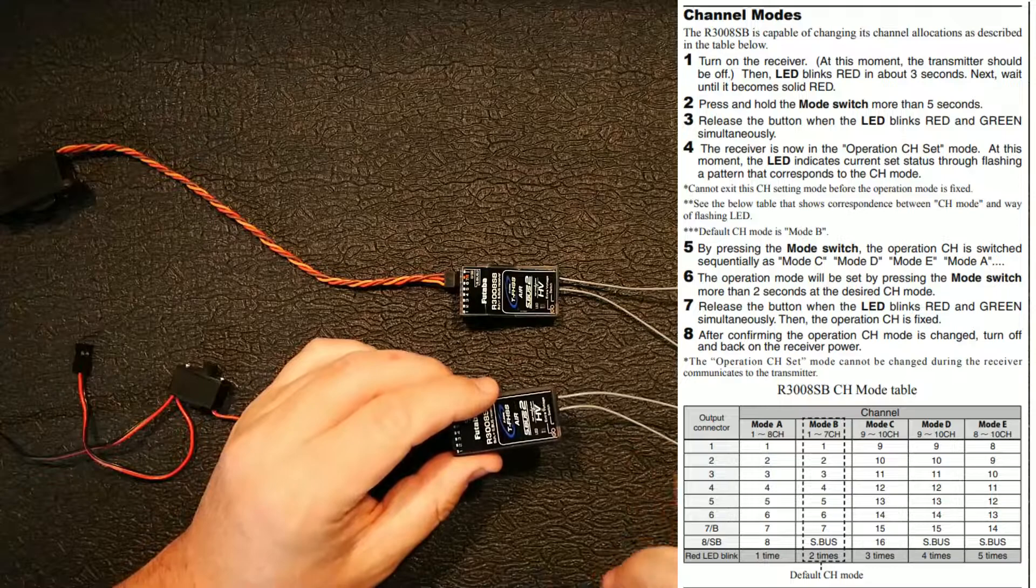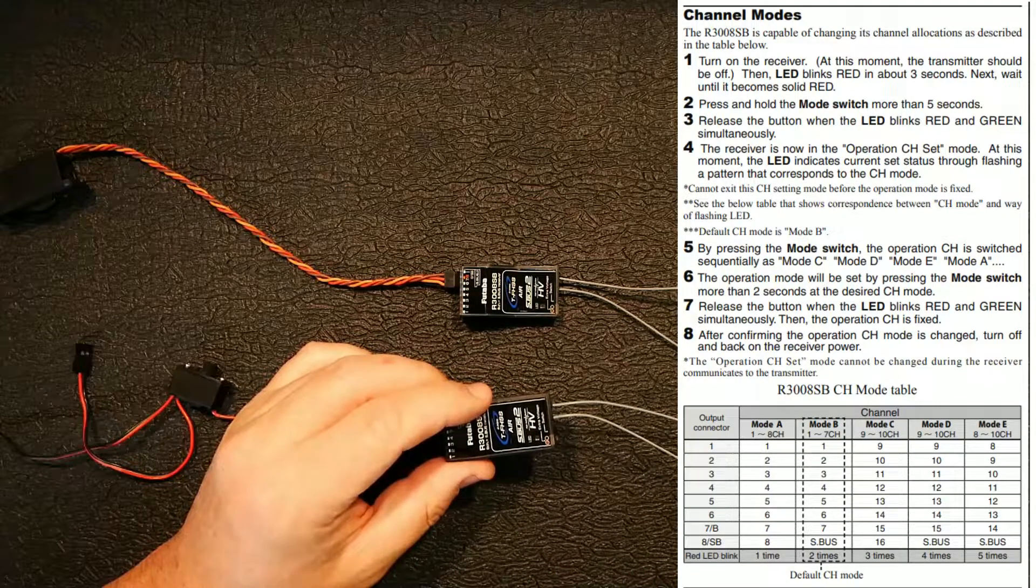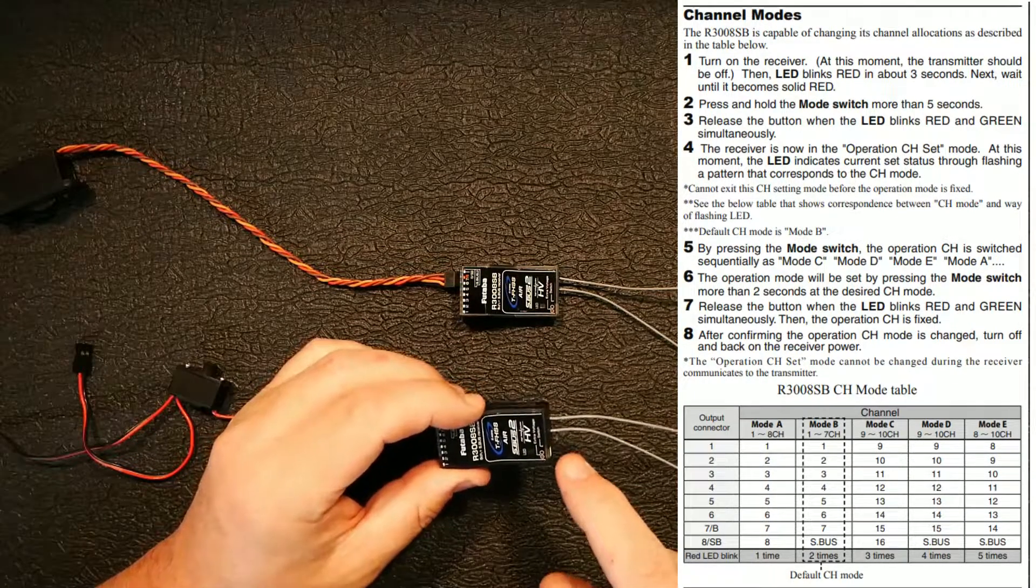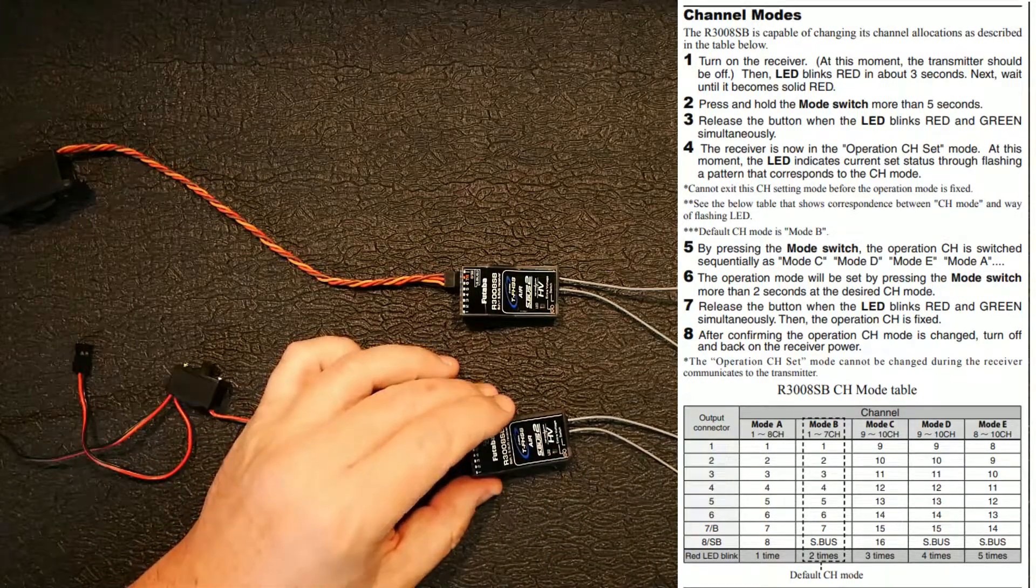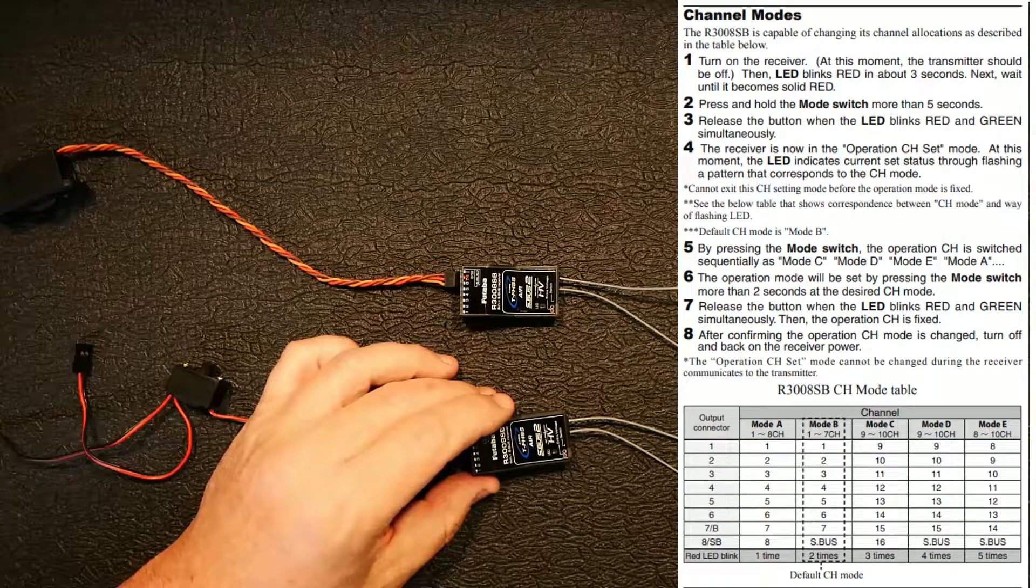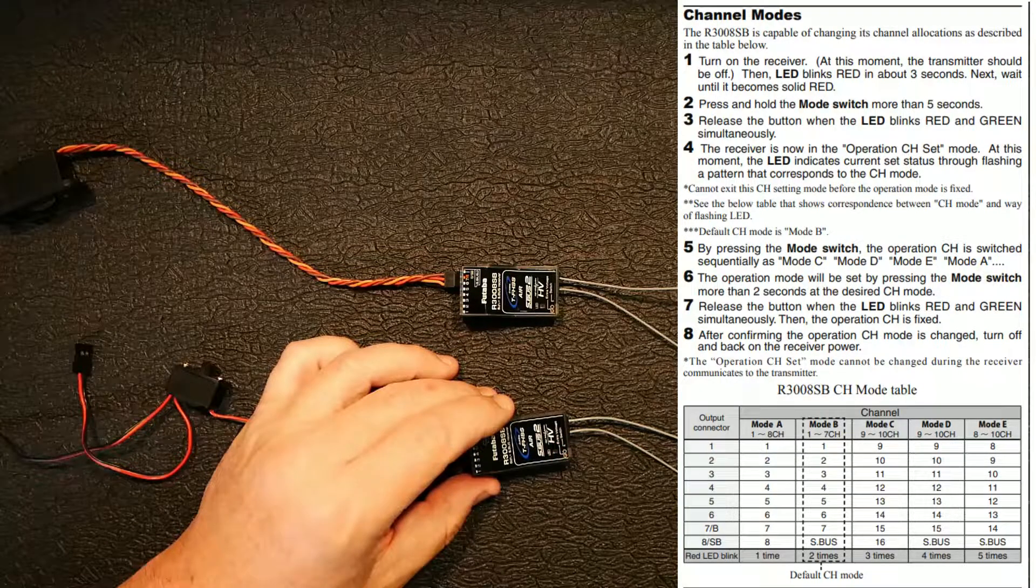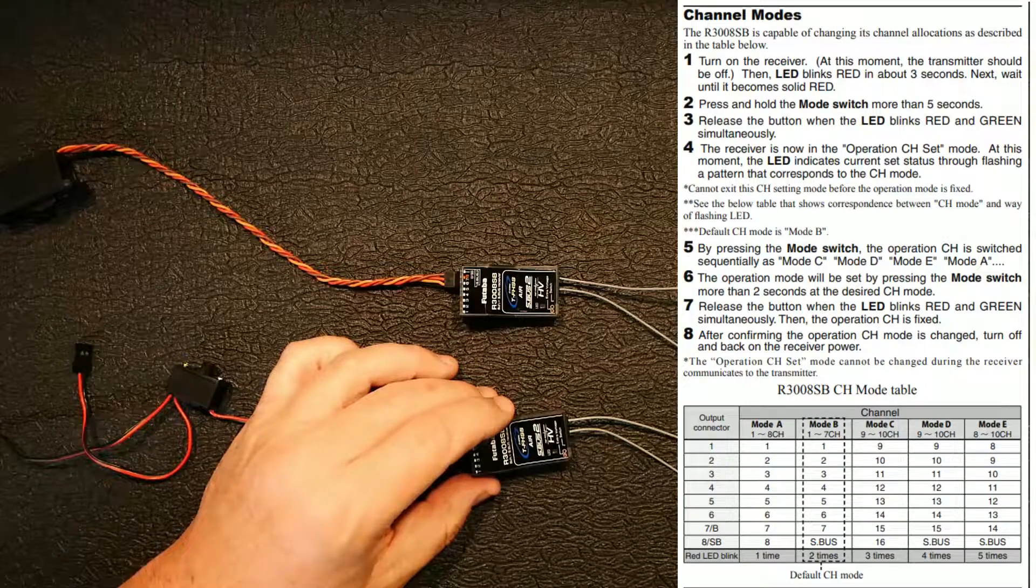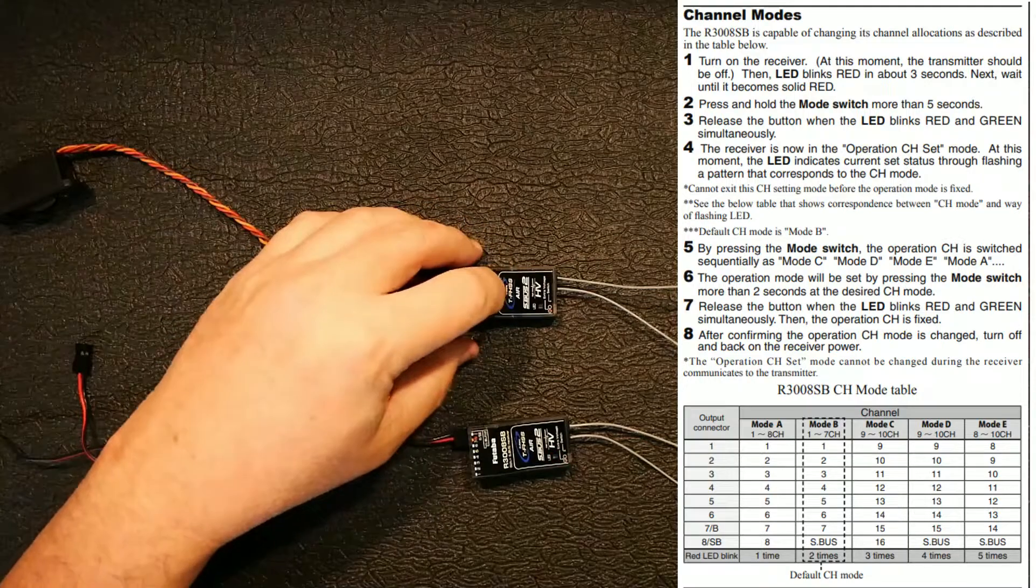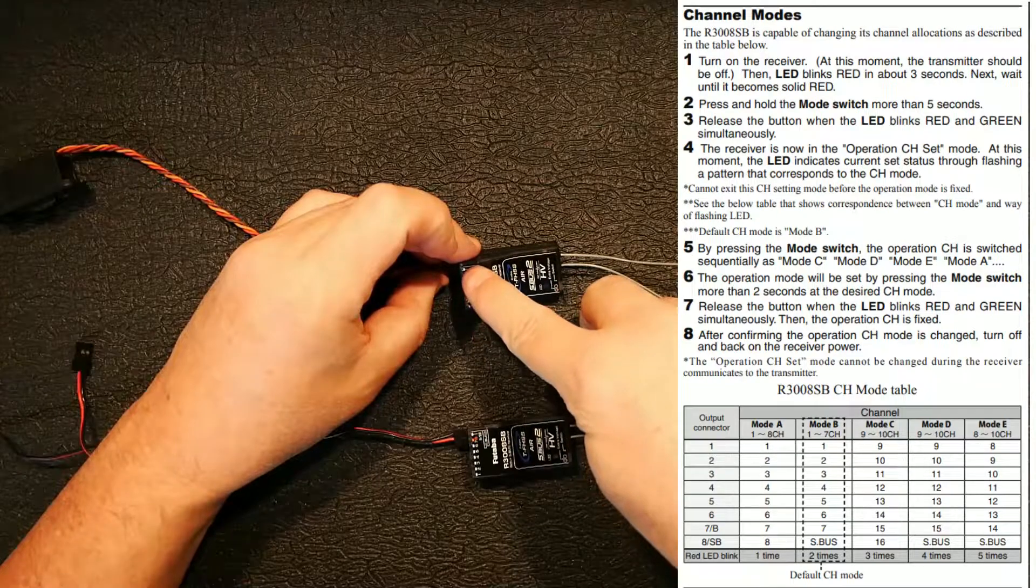Mode C would be nine through 16. Mode D would be nine through 15 and that eighth channel would be S-bus. And mode E would be eight through 14 and S-bus at the end, that would be flashing five times. So for this little demonstration I'm going to do right here, I'm going to do mode A and mode C, which basically I'm going to make one of these channels one through eight and this one right here will be nine through 16. So essentially the port one will be channel nine and it'll go all the way through 16.